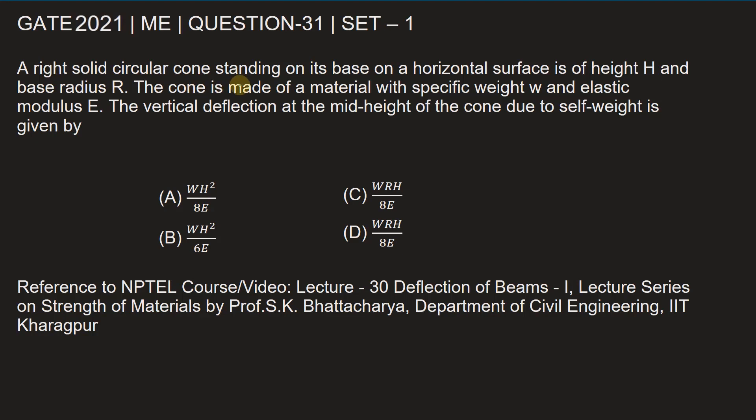A right solid circular cone standing on its base on a horizontal surface is of height H and base radius R. The cone is made of a material with specific weight W and elastic modulus E. The vertical deflection at the mid-height of the cone due to self-weight is given by.